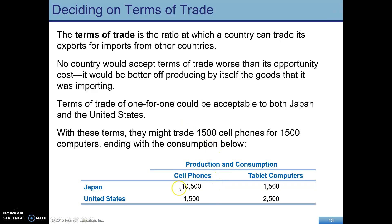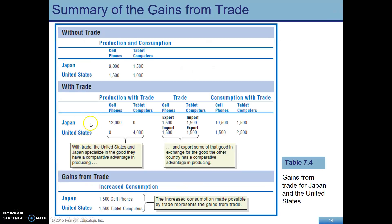With those trade terms, Japan and the U.S. decide to trade 1,500 units each. Japan is only producing cell phones but has traded to get 1,500 tablets. The U.S. is only producing tablets but has traded to get 1,500 cell phones. Comparing before and after trade, you can see that both countries have increased consumption.